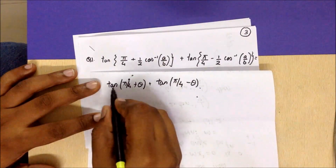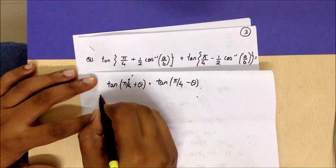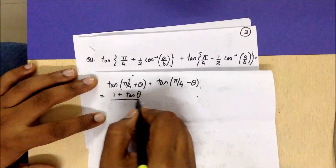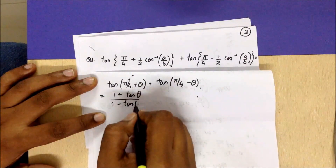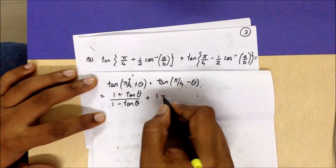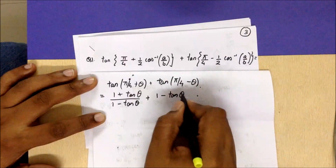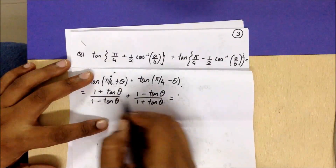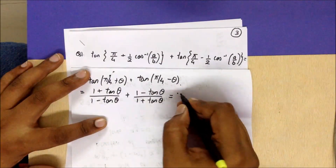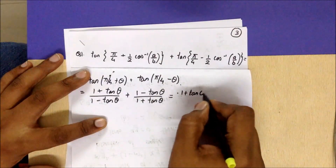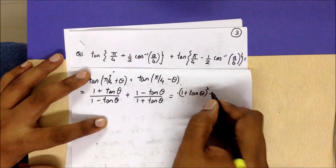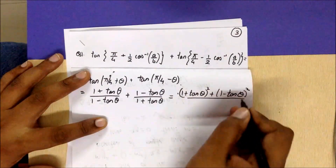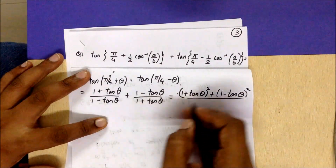Considering this as my theta, I write it as tan(π/4 + θ) plus tan(π/4 - θ). We apply the formula for tan(A + B). For this case, A is π/4, so I can write it as (1 + tan θ)/(1 − tan θ) for the first term, and (1 − tan θ)/(1 + tan θ) for the second term. Cross-multiplying gives (1 + tan θ)² plus (1 − tan θ)².